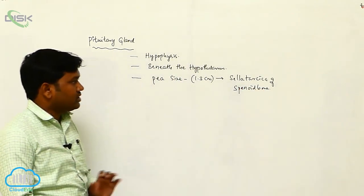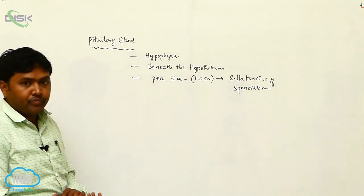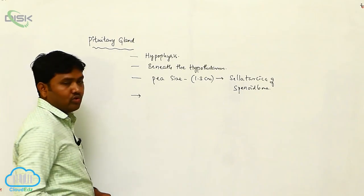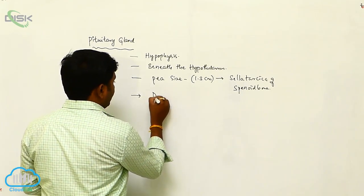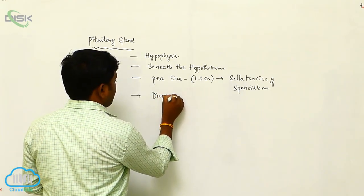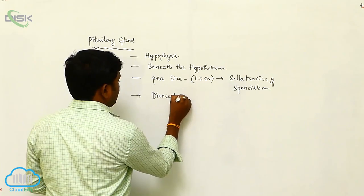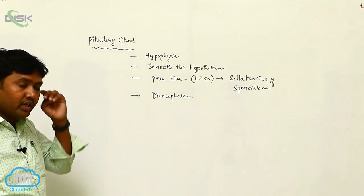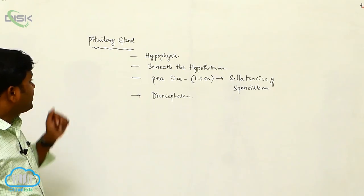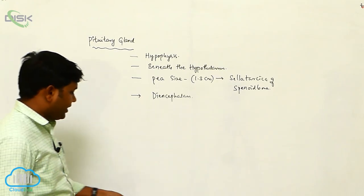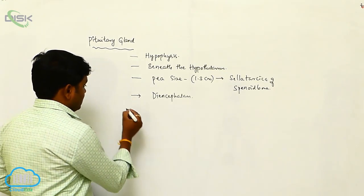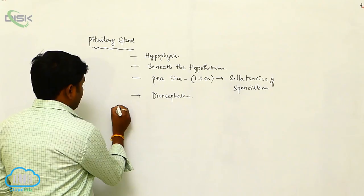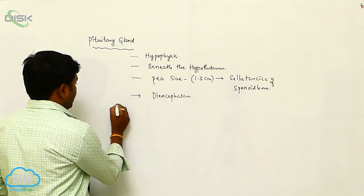The pituitary gland is closely situated near the diencephalon. Anatomically, the pituitary gland is subdivided into two parts.